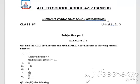Question number 1, related to your exercise number 2.2, is: find the additive inverse and multiplicative inverse of the following rational numbers. To find the additive inverse, you have to write the inverse operation of the given number.